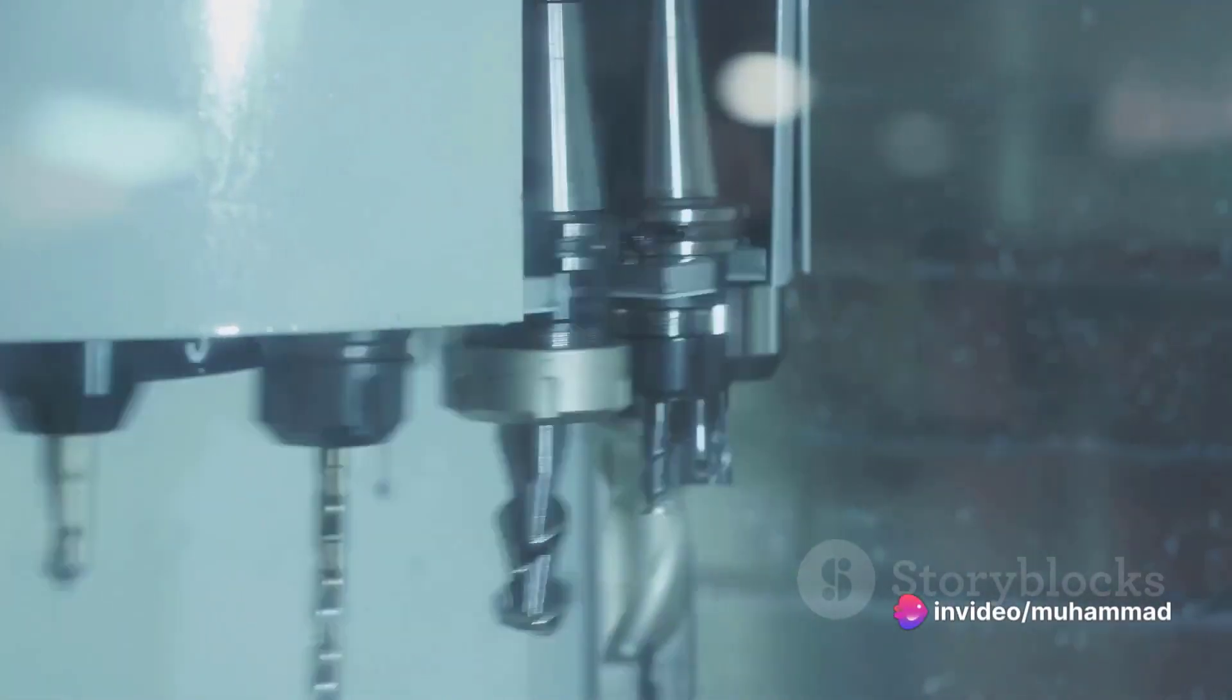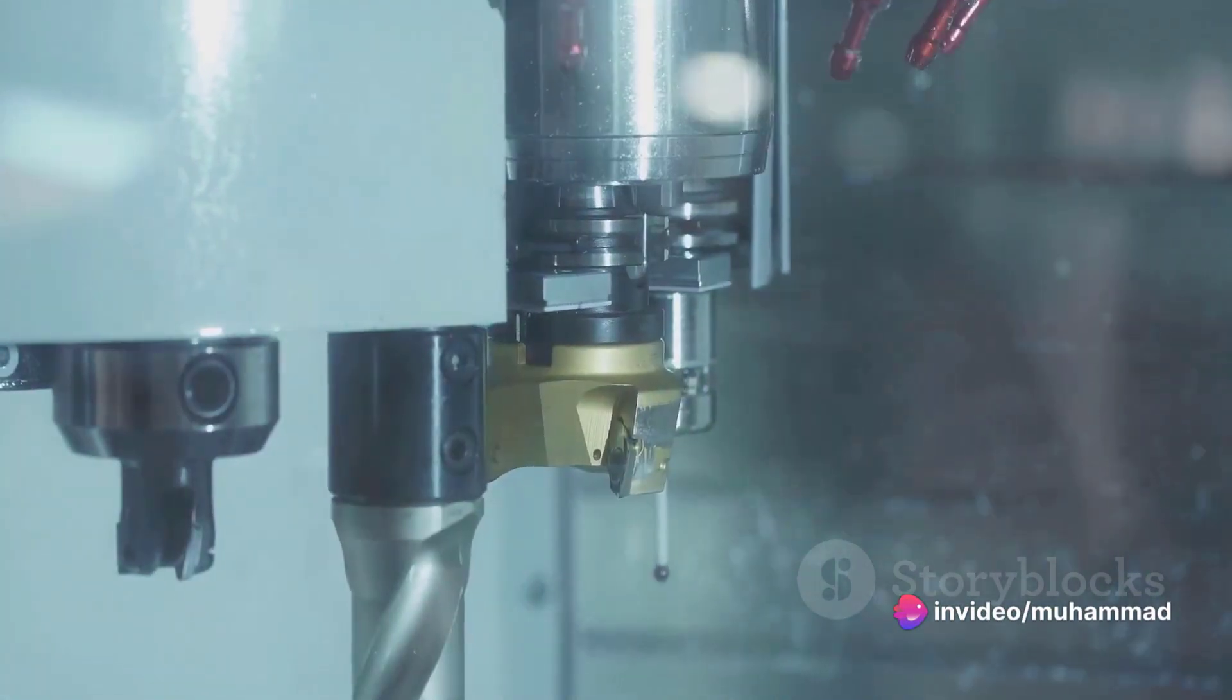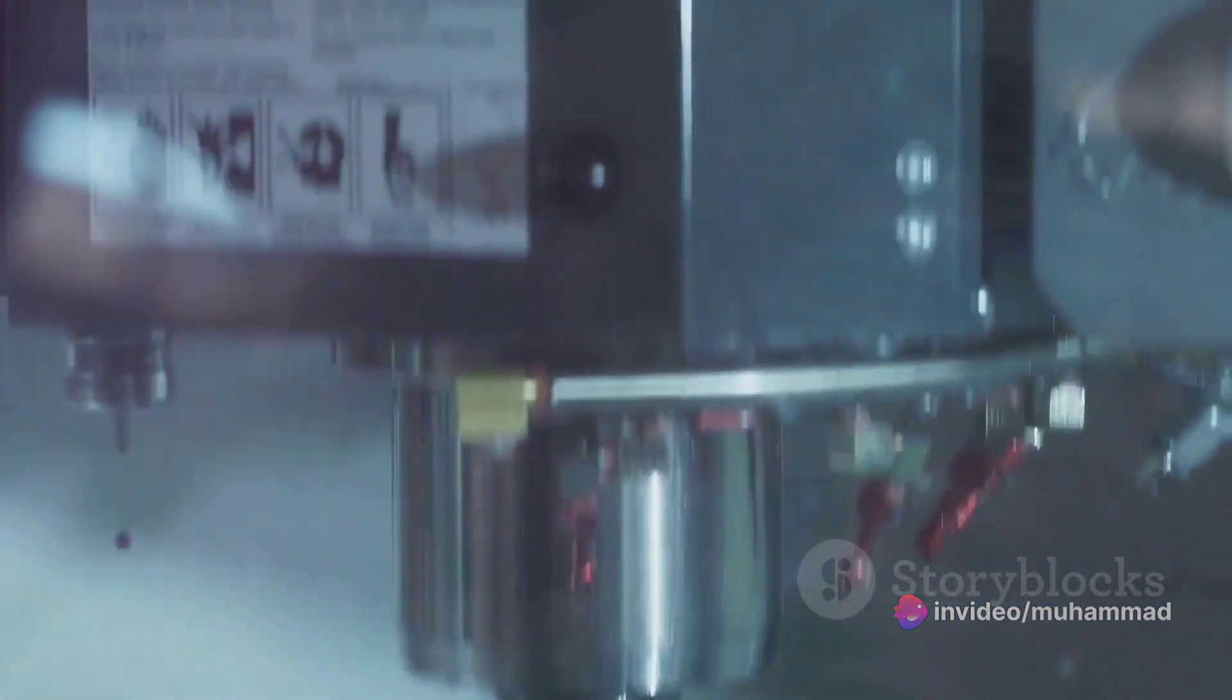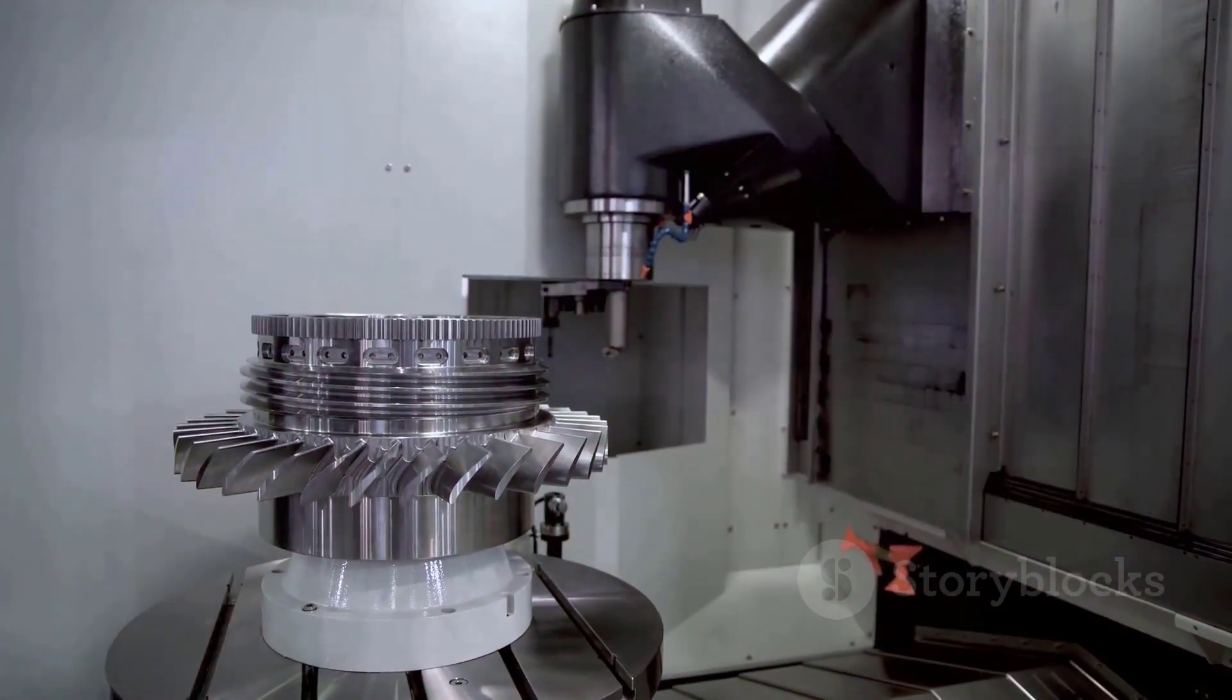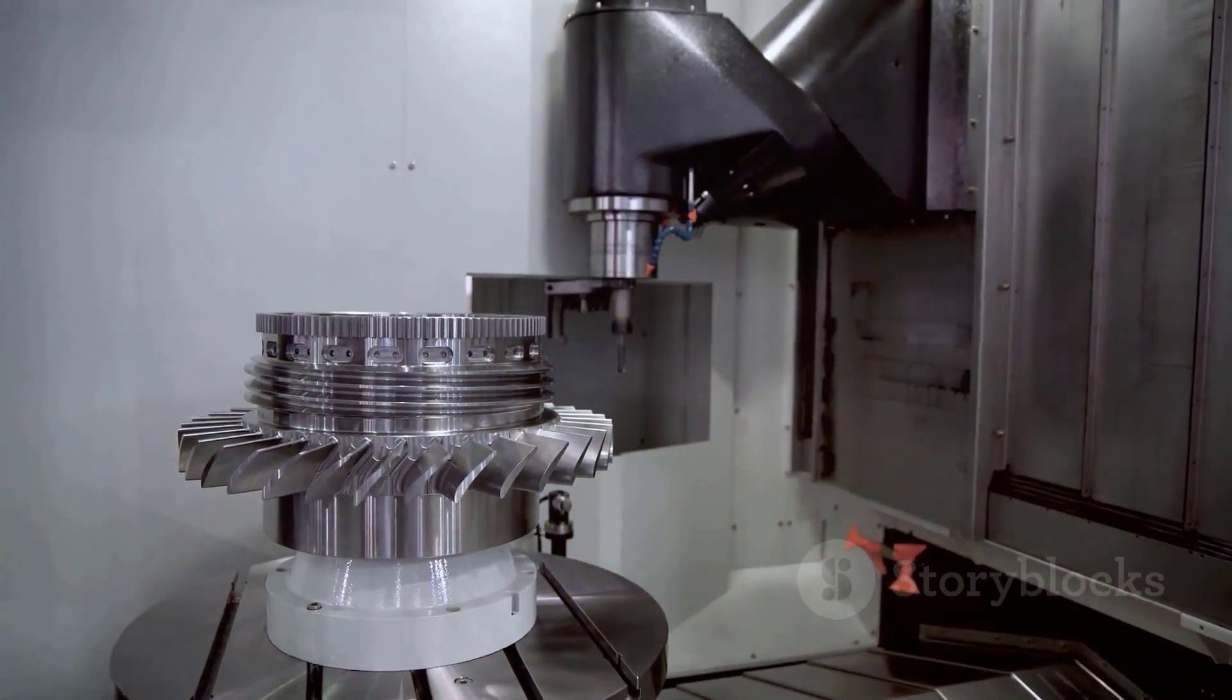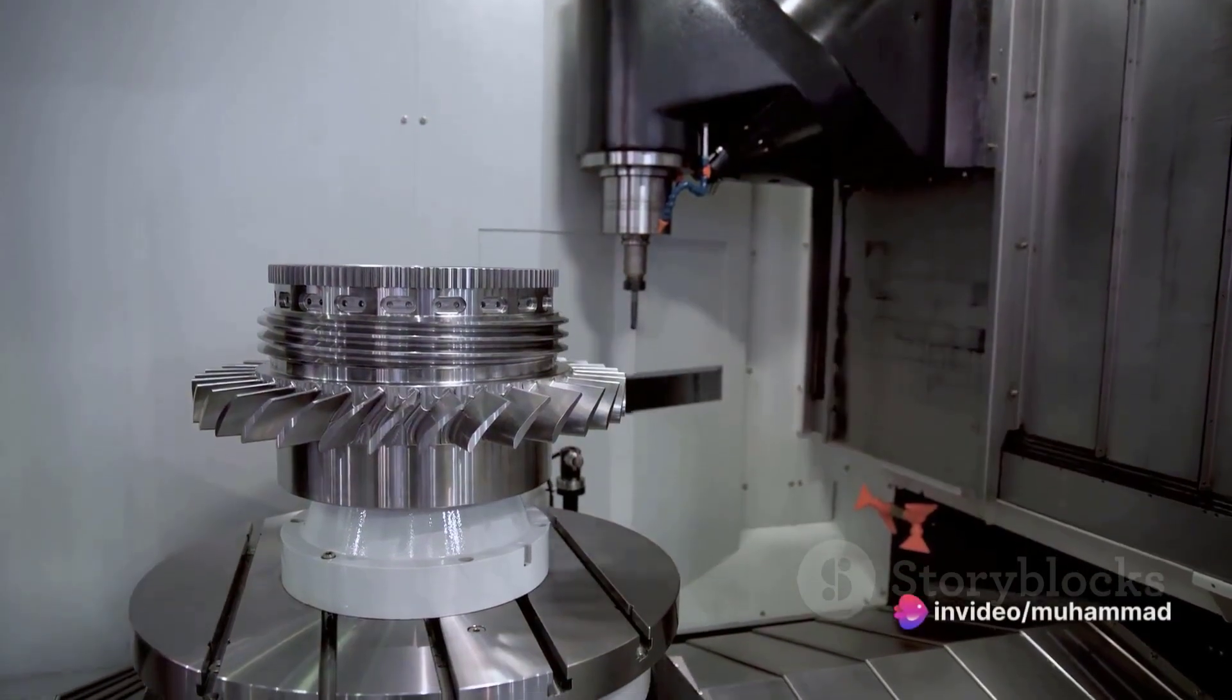Next, we have Computer-Aided Manufacturing, or CAM. This is where the computer controls the machines that produce the product. The computer can adjust the machines' operations in real-time, allowing for optimal efficiency and precision.